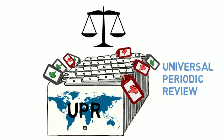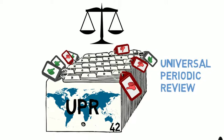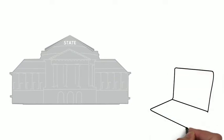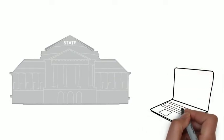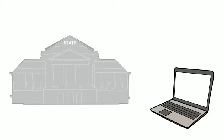So how does the UPR work in practice? 42 countries are reviewed every year, meaning that each United Nations member country is reviewed once every four and a half years. You can find a link to the timetable for UPRs on the website of the Office of the High Commissioner for Human Rights. It's a good idea to find out when your country is going to be reviewed next.